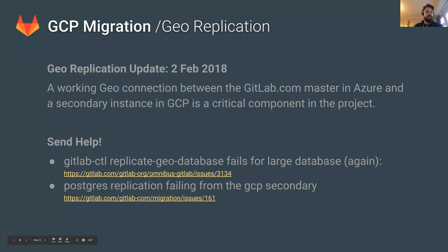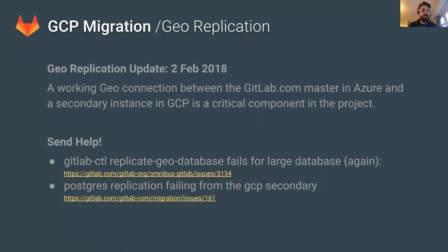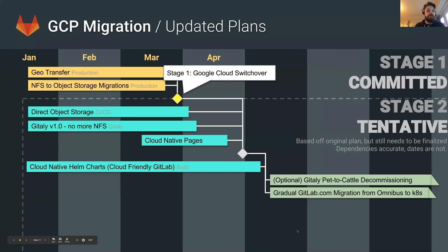Probably the most important part of the first stage of the GCP migration is the geo-replication. John Jarvis and the production team are working to get this started as soon as possible. Right now we're experiencing some problems with replication on Postgres, and I've linked to two issues — anyone who can help out would be greatly appreciated. We hope to have the Postgres replication started in the next few days.